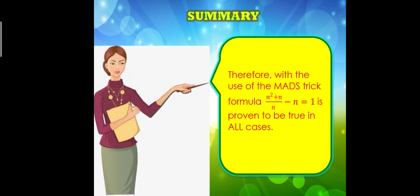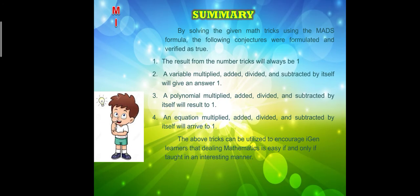Therefore, in our summary, we can conclude that with the use of the MADS trick formula N squared plus N over N minus N equals 1 is proven to be true in all cases. By solving the given MADS trick using the process or the MADS formula, the following conjectures were formulated and verified as true: that the result from the number trick will always be 1.